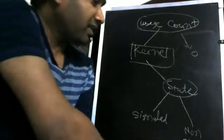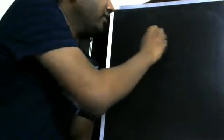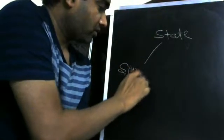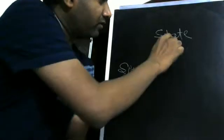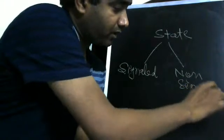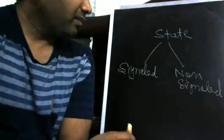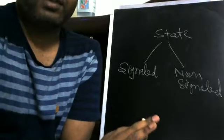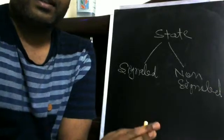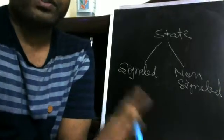The other concept is the state of the kernel object: signal and non-signal state. Signal means the kernel object is available. These kernel objects - mutex, semaphores, event objects - are all used for synchronization.